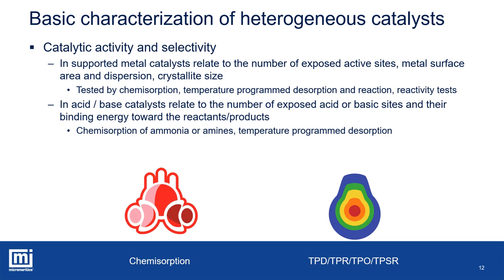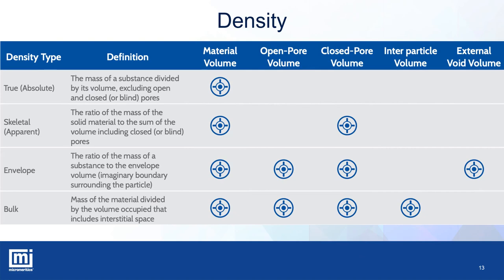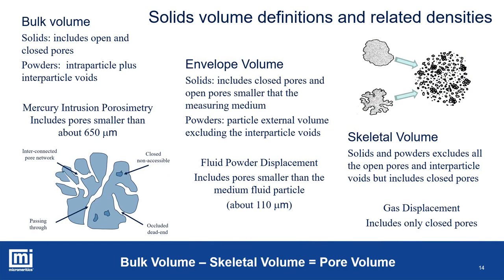Density is an important parameter in catalysis and can be conveniently used in relation to other material properties like total porosity. The definition of density depends on the solid volume definition. We will focus on three main definitions. Bulk density refers to the external sample volume, inclusive of all open and closed pores in a solid and intra plus inter-particle voids in a particulate system. It can be measured by mercury porosimetry when the sample is under vacuum; in these conditions, mercury cannot penetrate any cavity smaller than about 650 microns. Envelope density also refers to the external sample volume, but the definition changes depending on sample nature. In the case of a solid, the envelope volume is inclusive of all pores that cannot be penetrated by the measuring medium — with fluid powder displacement, this limit is about 110 microns.